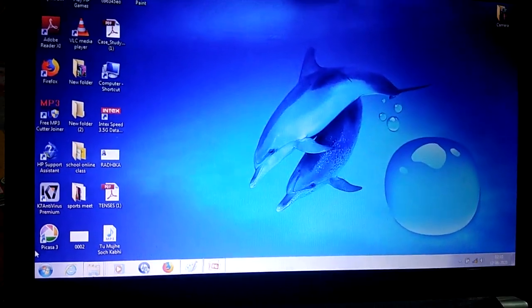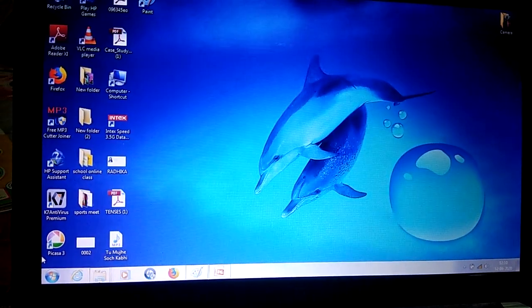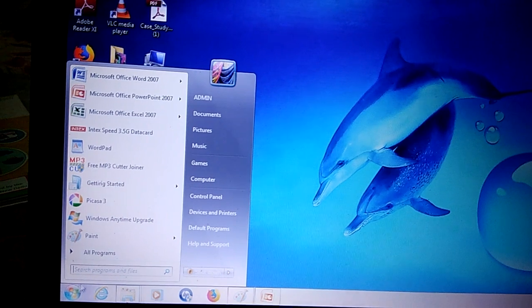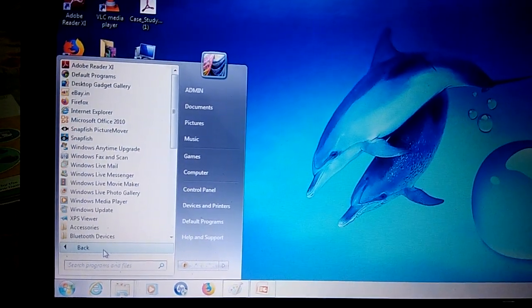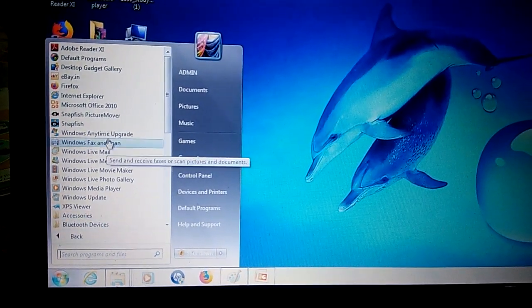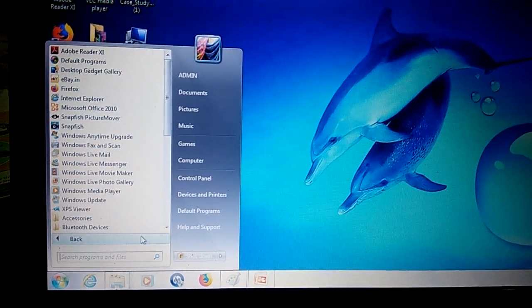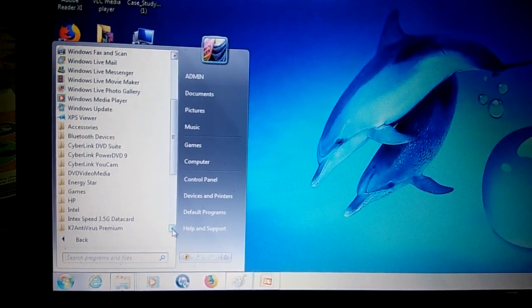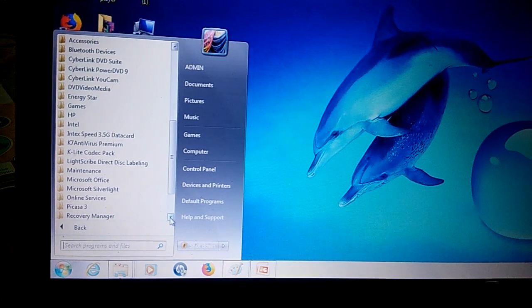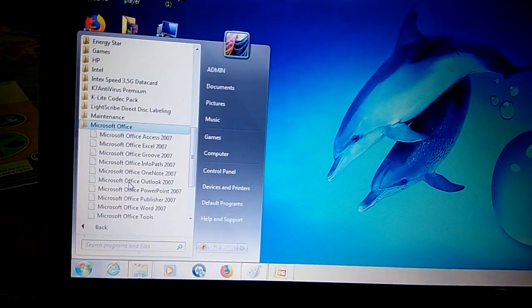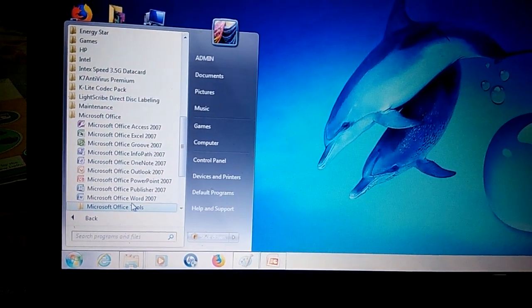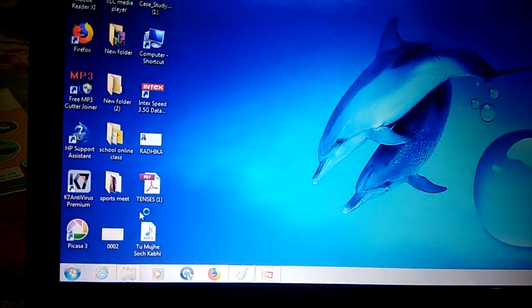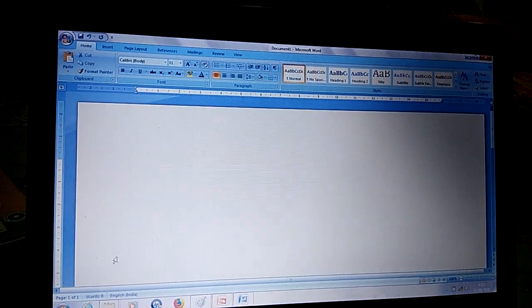First, we will open MS Word. For that, click on the Start button, click on All Programs, then click on Microsoft Office, and click on Microsoft Office Word. Now this is an MS Word window.